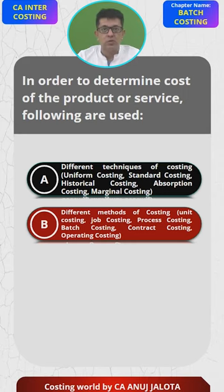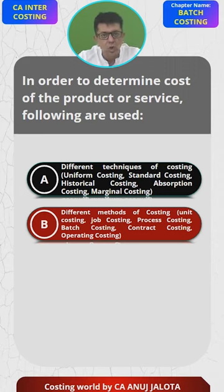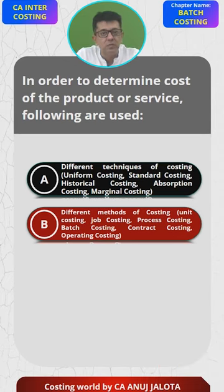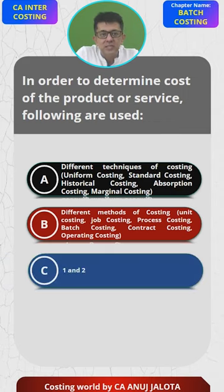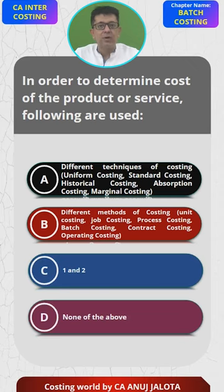Let me remind you of the question: in order to determine the cost of a product or service, the following are used. In case you want to find out the cost of your company, what should you follow? Is it A — different techniques of costing? B — different methods of costing? C — both 1 and 2? Or D — none of the above?